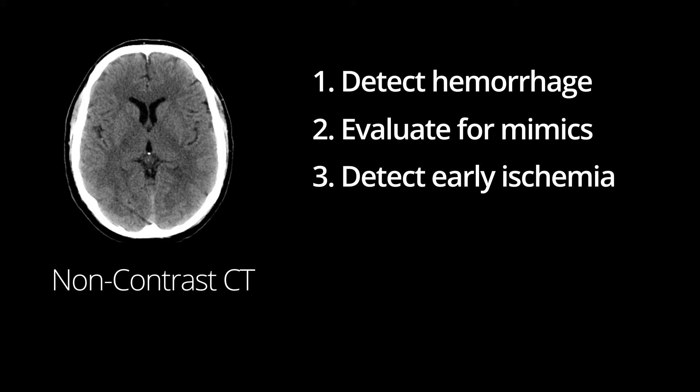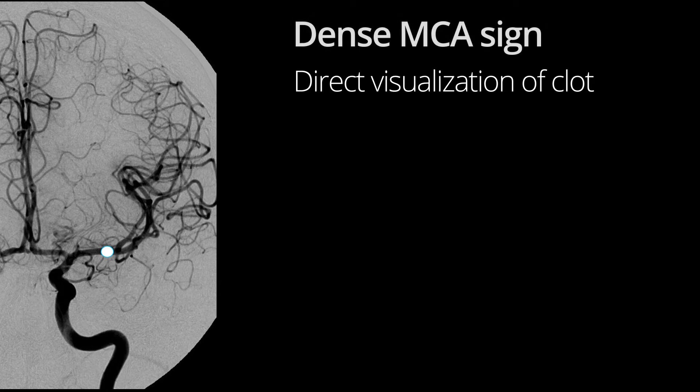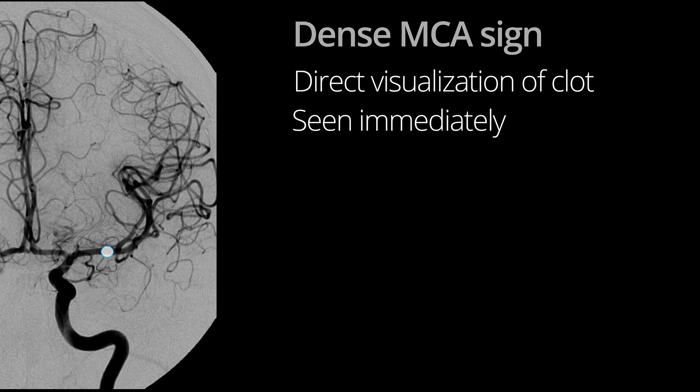There are some subtle CT findings that can be seen within the first 3 hours of ischemia. One such finding is direct visualization of clot within the lumen of an artery. This is the so-called dense MCA sign, and is the earliest sign of ischemia, given that it can be seen immediately since clot is denser than flowing blood.